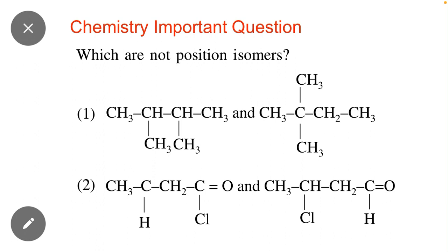So the question is which are not position isomers. Here you can see that there are two options. I mean two different compounds are given in option 1 and option 2. So we have to identify which is not a position isomers. Keep in mind the position isomers. Just follow the condition.